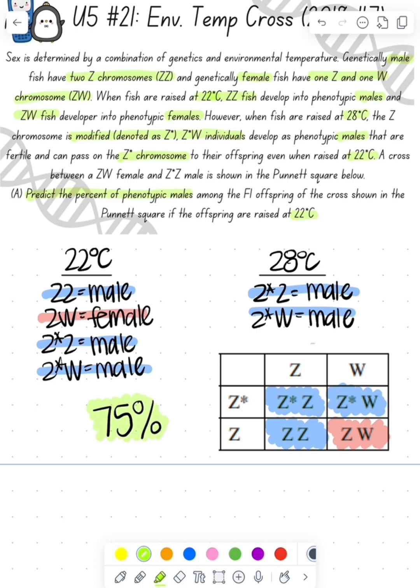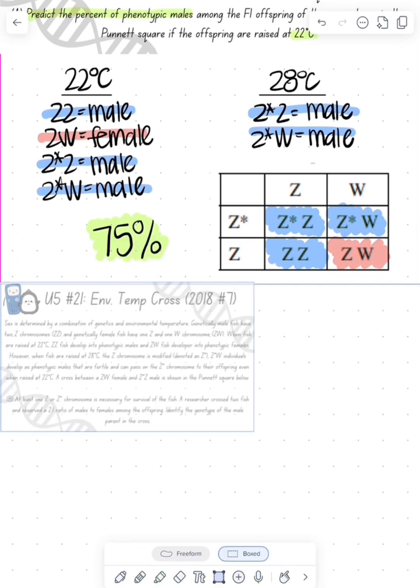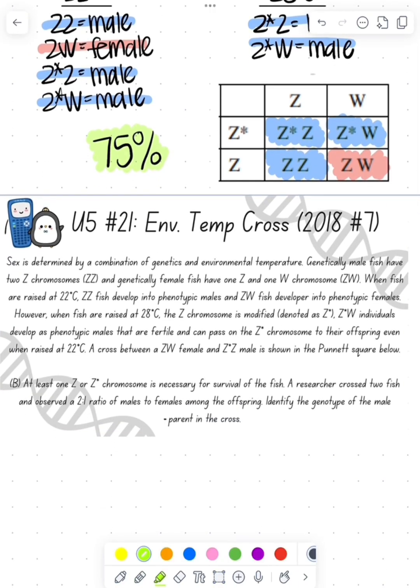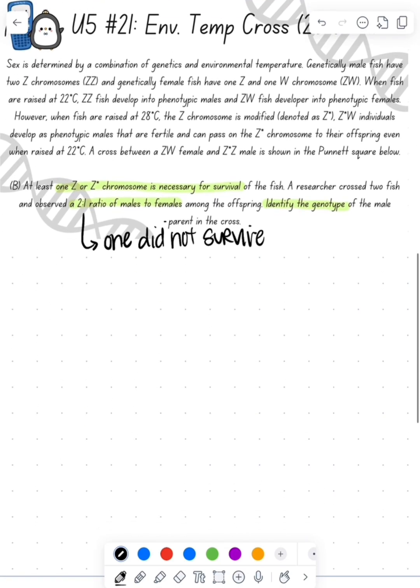Part B tells us that you have to have at least a Z or a Z* in order to survive. They cross two fish and say two to one ratio. We need to figure out what is the identity of that male. Two to one tells me that one of those offspring didn't survive. Let's do a Punnett square and see if we can work backwards to solve for what is that parent.